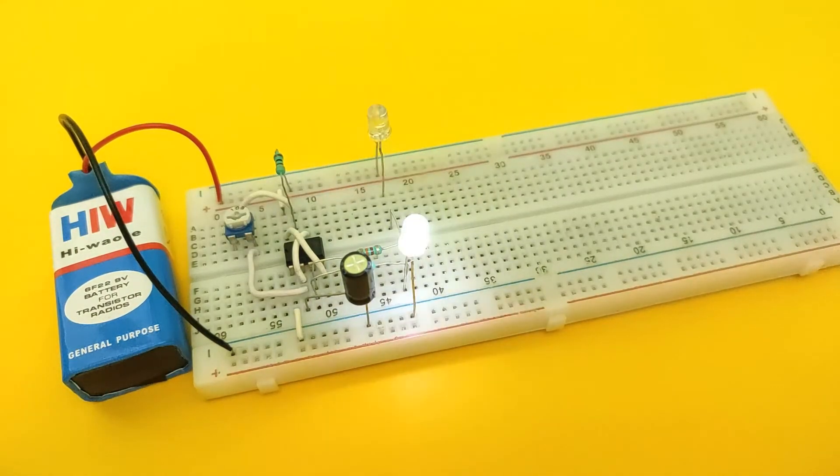10k resistor can be replaced by a 10k potentiometer to control the flashing speed.